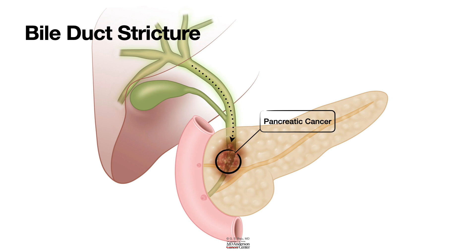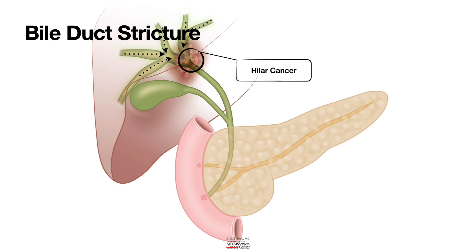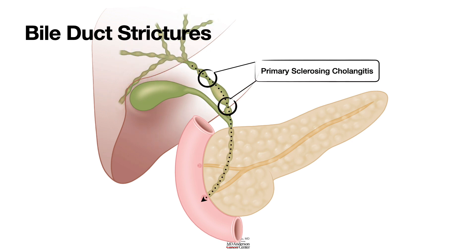Bile duct strictures aren't just from surgery. Pancreatic head cancer is a big cause because the bile duct runs right through the pancreatic head. There's also cancer of the bile duct itself — cholangiocarcinoma, or hilar cancer — right up at the confluence. So malignancy is a major concern when you see a stricture. Another cause, non-cancerous but still serious, is primary sclerosing cholangitis — PSC — an inflammatory disease causing multiple strictures throughout the bile ducts. That's why ERCP with brushings or biopsies is often needed to figure out the cause.